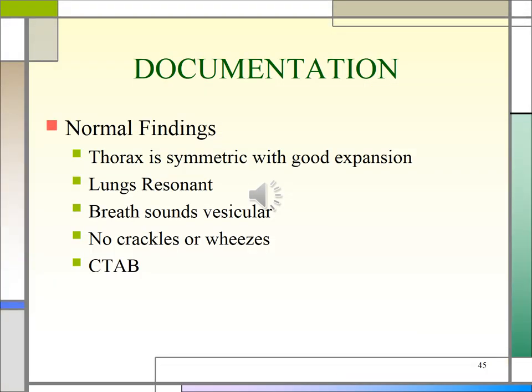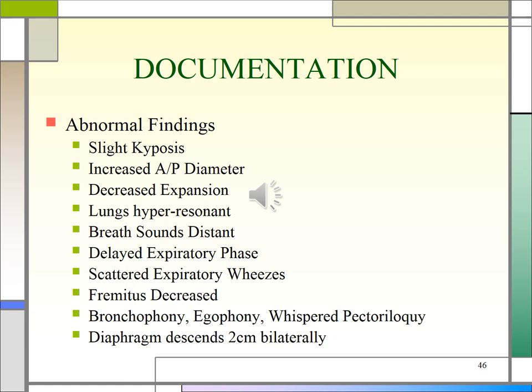There are many ways that you can document. Normal findings are a symmetrical thorax with good expansion, resonant lungs, vesicular breath sounds, no crackles or wheezes, and clear to auscultation bilaterally. Also, no vocal sounds noted such as bronchophony, egophony, or whispered pectoriloquy. To document abnormals, look for kyphosis, increased AP diameter, decreased expansion, hyperresonant lungs, distant breath sounds, delayed expiratory phase, scattered expiratory wheezes, decreased fremitus, bronchophony, egophony, or whispered pectoriloquy. Note that the three vocal resonance tests — bronchophony, egophony, and whispered pectoriloquy — are all testing for fluid in the alveoli, so you only need to do one of those.